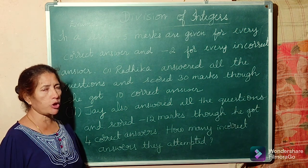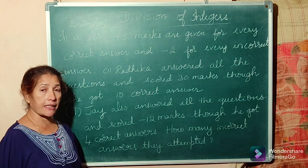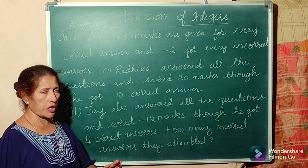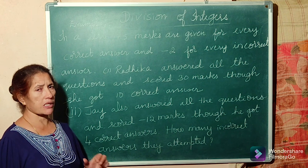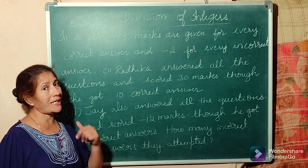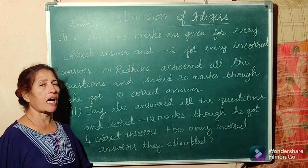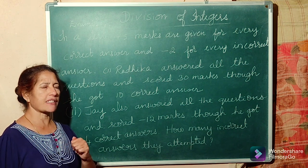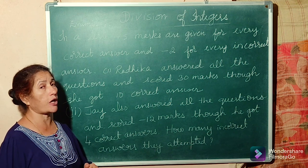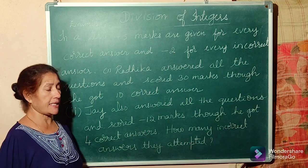Radhika wrote 10 correct answers but she got only 30 marks. Why? Because some marks are deducted for the incorrect answers. So, what we have to find out is: how many incorrect answers did Radhika and Jai each get? Shall we start?